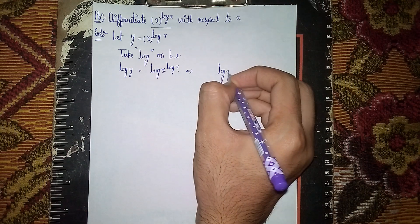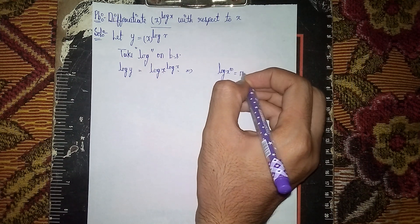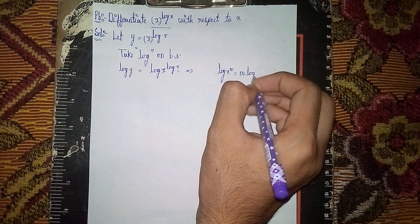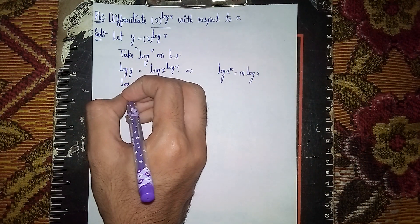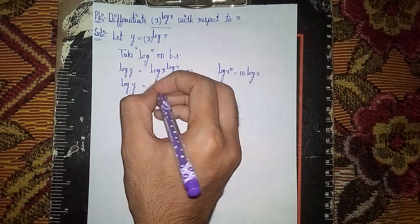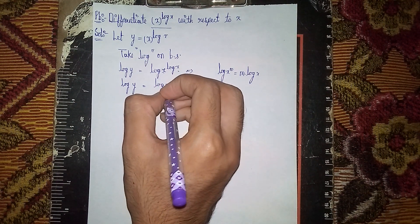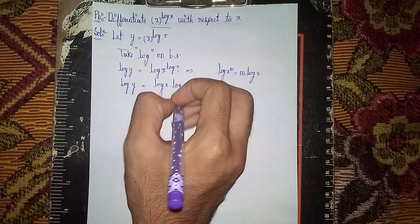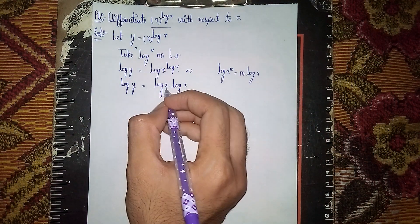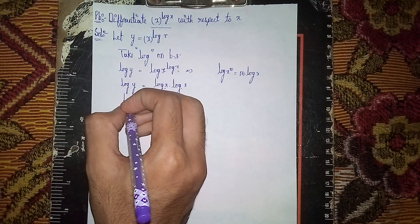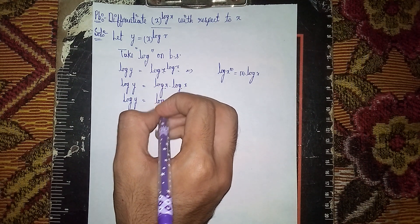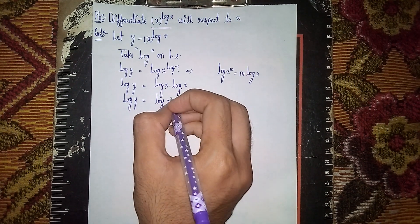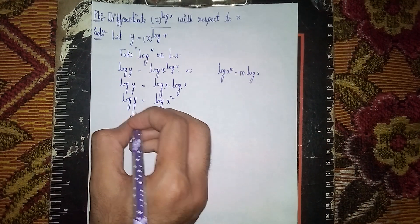The logarithm formula is log(x^m) = m log x. So log y equals log x times log x, which becomes log y = (log x)^2.